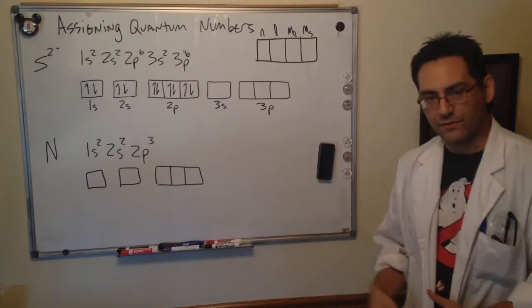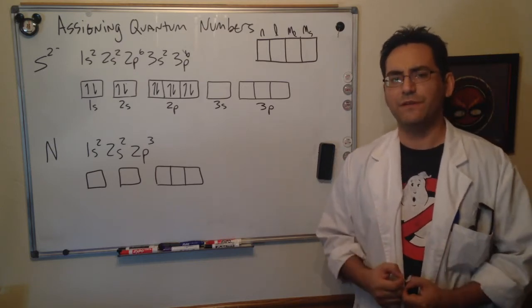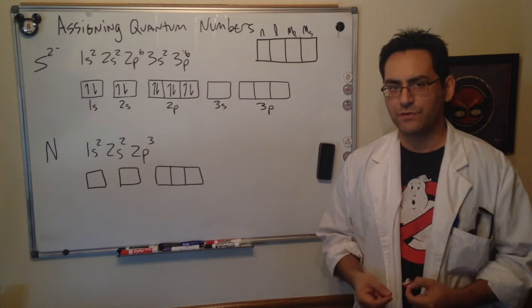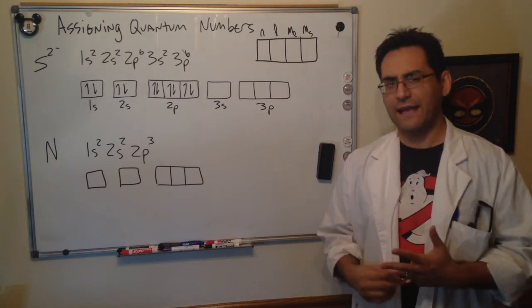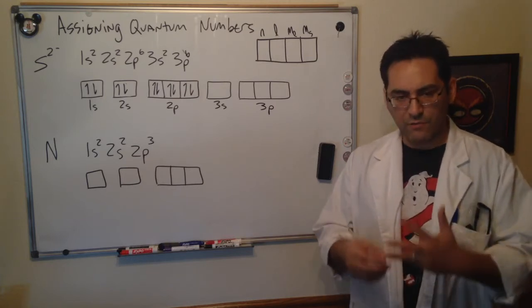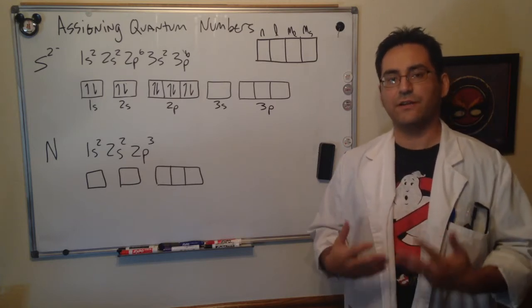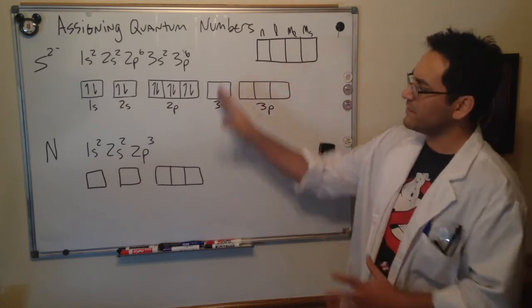Welcome back to Chem 101. In the previous videos we took a look at how we determine the values of quantum numbers such as the values of n, l, ml, and we didn't talk about ms but we'll refer to that in this video.